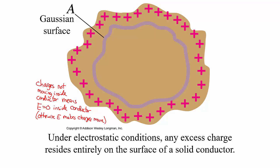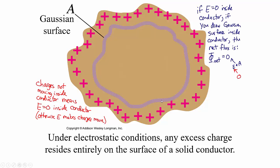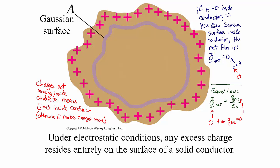If I draw a Gaussian surface inside the conductor — some arbitrary shape — we know that the electric field is zero inside the conductor, so the electric flux through that Gaussian surface must be zero. Electric flux is electric field times area, and if the electric field is zero, even though there is some surface area, the flux is zero. Gauss's law says the net electric flux equals q enclosed divided by epsilon zero, so if the net flux is zero, the enclosed charge must be zero. All of the excess charge has to be on the outside, on the very edge of that conductor.